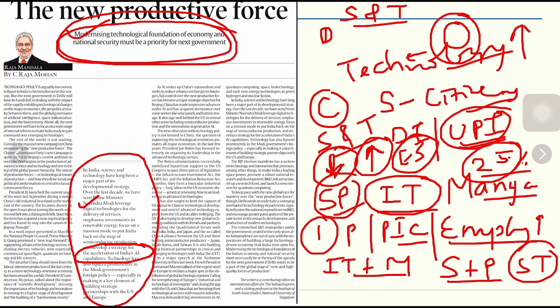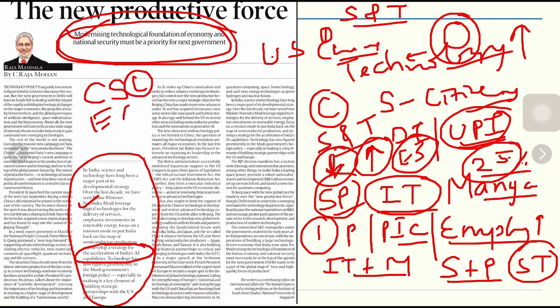Right now there is a fight between the US and China because China is trying to leapfrog in the technological domain. China wants its economy to move away from export-driven, low-value high-quantity products toward a high-value model, and science and technology can play a major role in achieving that.